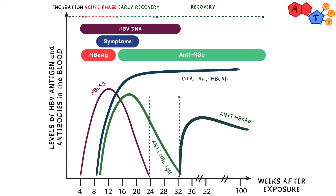The next phase is when IgG against the surface antigen starts to rise — a marker that the person is now immune. There is a point when hepatitis B surface antigen has dropped to zero but IgG has not developed yet; this is called the window period. During the window period, IgM hepatitis B core antibody will be positive. Hepatitis B is the most challenging of all the hepatitis viruses, so make sure you know the serology — it gets much easier from here.